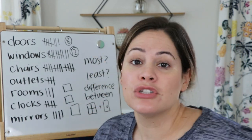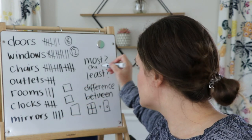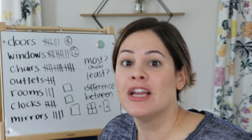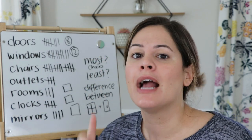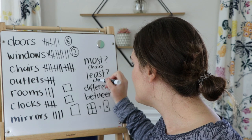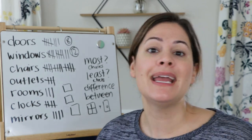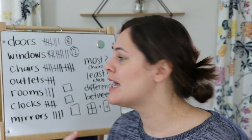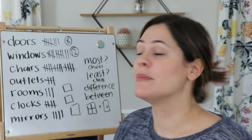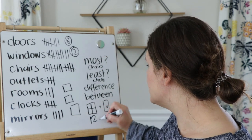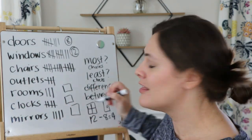After you've done that, I want to know some of these questions. What did you have the most of? I had the most chairs, so I would write down chairs. What did you have the least of? I actually had the least amount of clocks — and don't forget, I even counted the ones on my oven and microwave. Then there's a question asking what is the difference between the amount of doors and windows. I have eight doors and twelve windows, and to find the difference I subtract: twelve minus eight equals four. That is the difference.